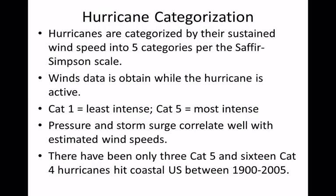There have not been very many Category 5 hurricanes — only about 3 Cat 5s and 16 Cat 4 hurricanes between 1900 and 2005. In that sense, Category 5 hurricanes are even rarer than EF5 tornadoes, making them the most extreme severe weather events.